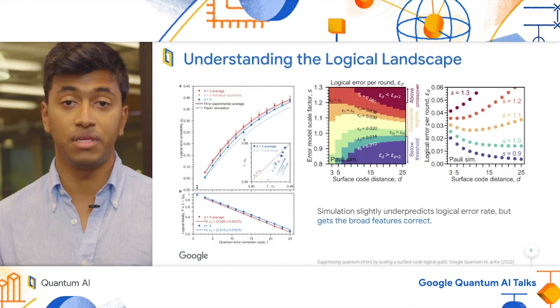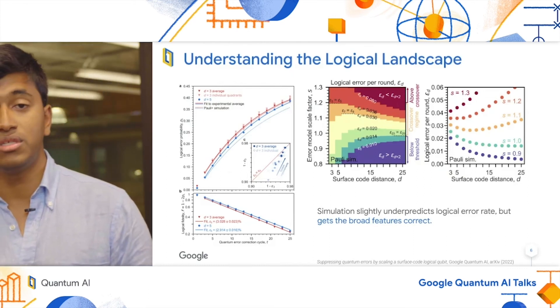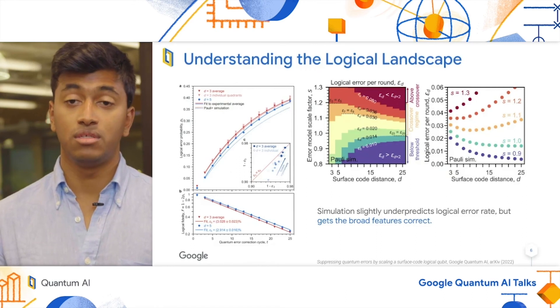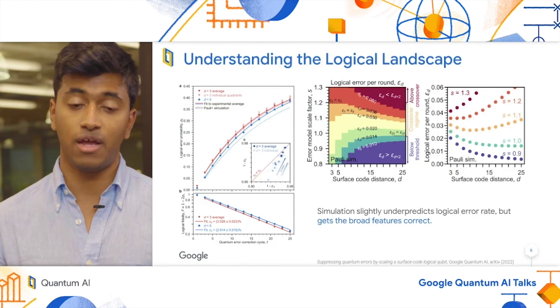You can see that the distance 3 simulation matches a lot closer than distance 5, which is because distance 3 codes are less sensitive to error probabilities than distance 5. So slight deviations are magnified.